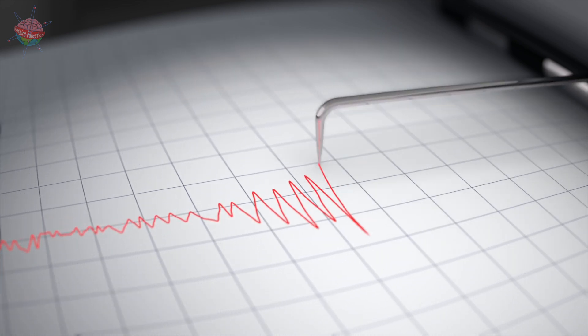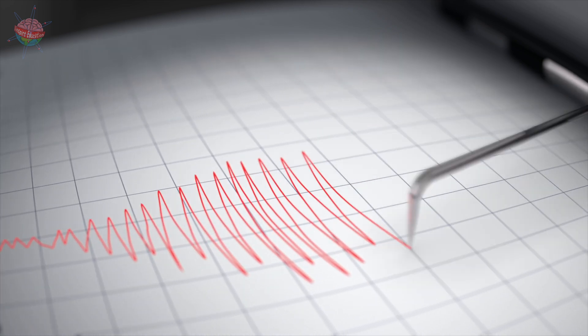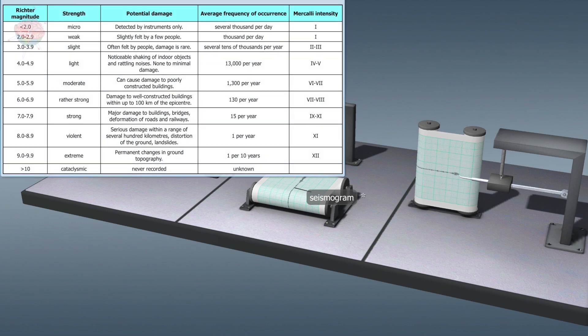The modified Mercalli scale, or MM, classifies earthquakes based on their intensity. This 12 degree scale shows the effects of an earthquake at a given location.